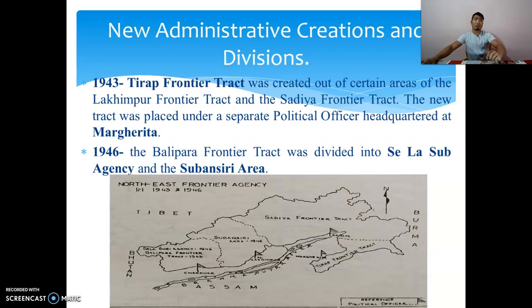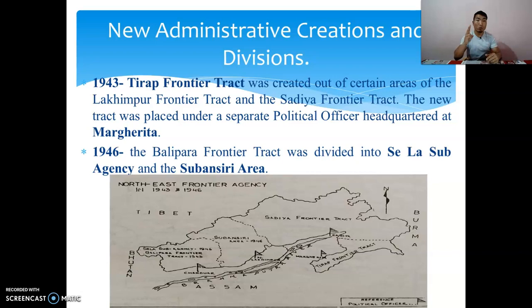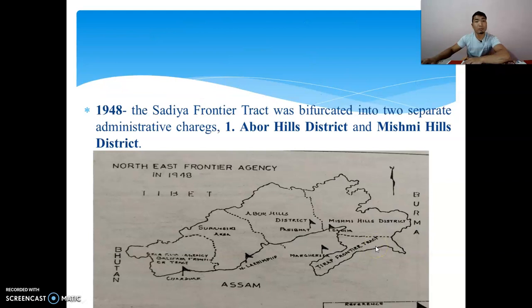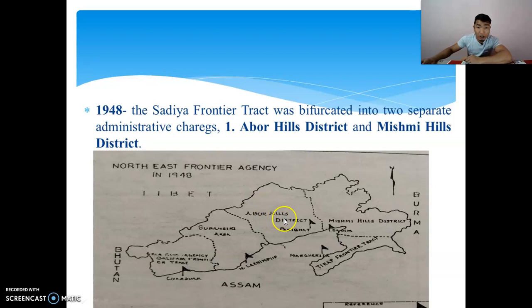In 1943, the Tirap Frontier Tract was created from certain areas of the Lakhimpur Frontier Tract and Sadiya Frontier Tract. In 1946, the Balipara Frontier Tract was bifurcated into two areas: Selah Subagency and Shubansheri Area. In 1948, the Sadiya Frontier Tract was also divided into two administrative regions: Abor Hills District and Mismi Hills District. These can be seen on the map.